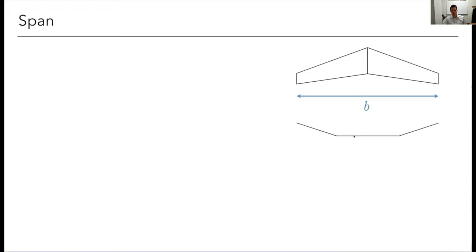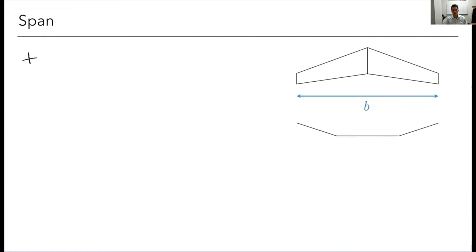Let's break these down one at a time. First, wingspan — remember, wingspan is the distance tip to tip, and it's projected. So if there's dihedral, it's still that projected span. For example, if I have vertical winglets, I can increase them as much as I want and that doesn't actually change my span. The most apparent and biggest benefit is that increasing wingspan will decrease induced drag.